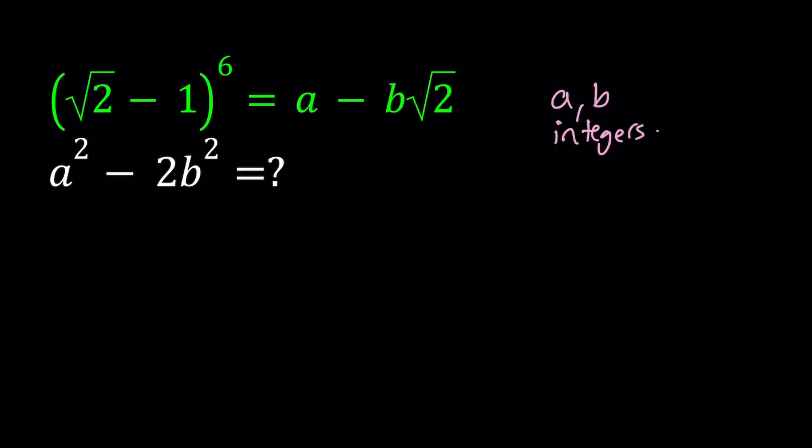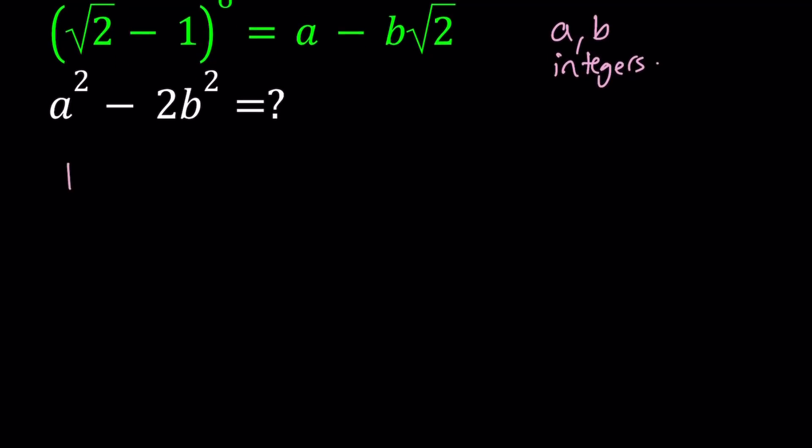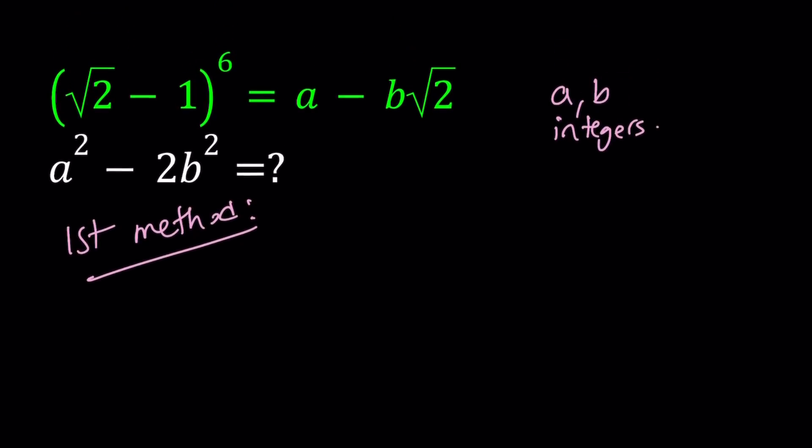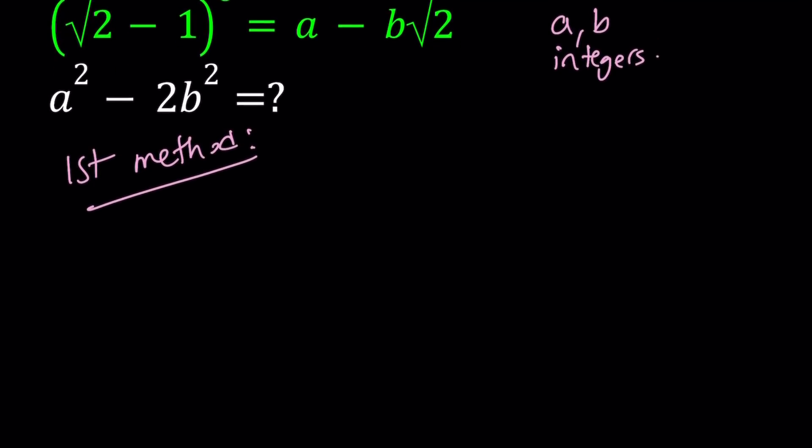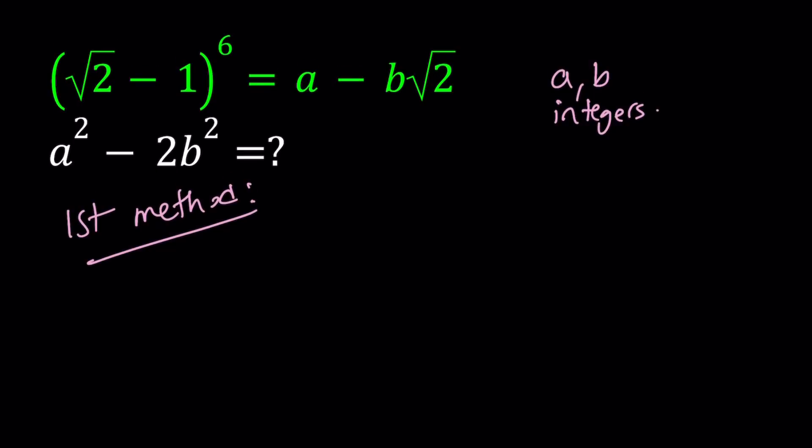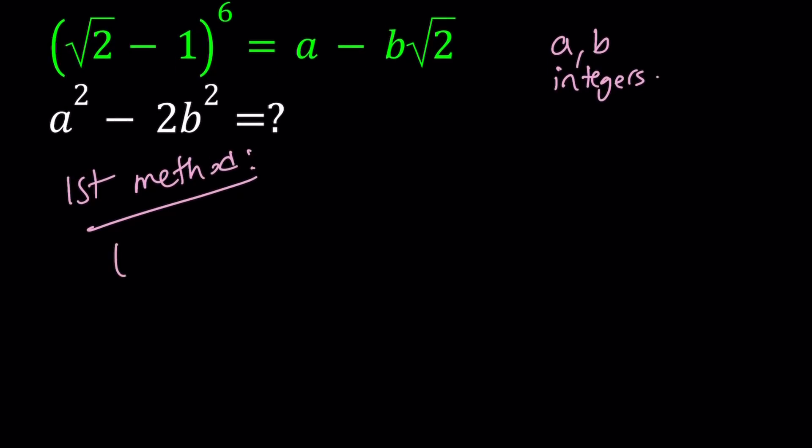And we're going to evaluate a squared minus 2 times b squared. I'm going to be presenting two methods. Let's start with the first one. Our first method, unfortunately, is a little bit painful. So, our mantra is no pain, no gain. We're going to be expanding this expression.